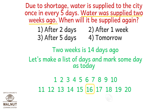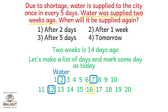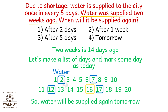Water was supplied 2 weeks ago, so going back 14 days we come to date 2. Since water is supplied once every 5 days, the next day after 2 will be 7, then 12, then 17. So water will be supplied again tomorrow, which is option number 4.